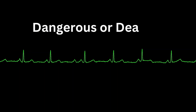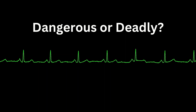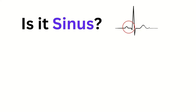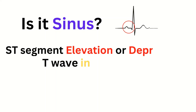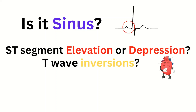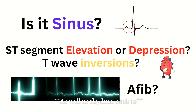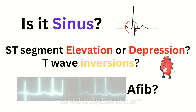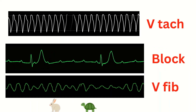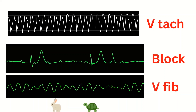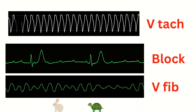If it doesn't match normal, I start looking for specific things in rhythms that are deadly and or dangerous. Things that I'm looking for are whether the rhythm is sinus, ST elevation or depression, T wave inversions, as well as atrial fibrillation, then VTAC, blocks, V-fib, and whether the rate is too fast or too slow.